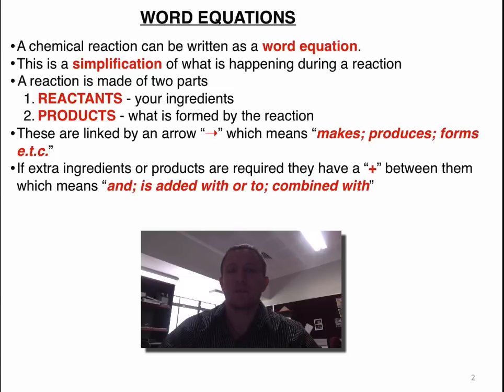So there's four main things that you need to be aware of. Reactants on the left-hand side, arrow joins them, products on the right-hand side, and then a plus sign goes between each of the reactants or products if we've got more than one.